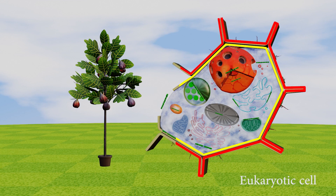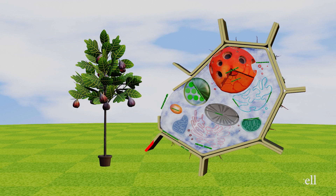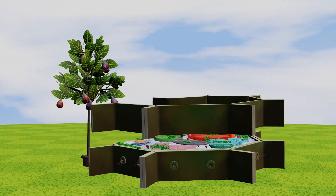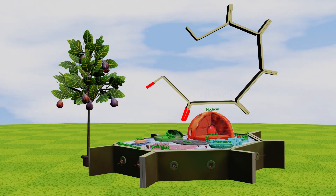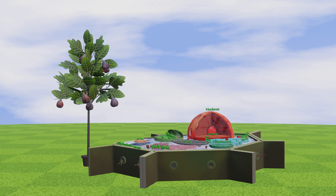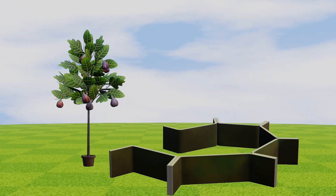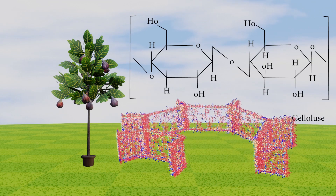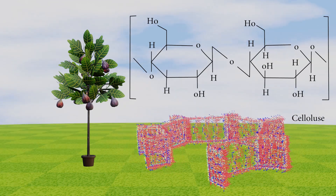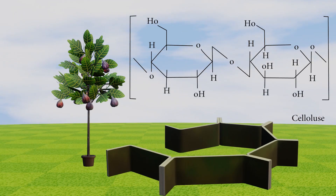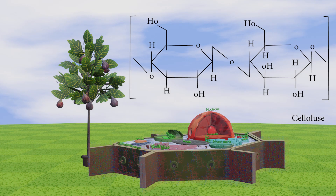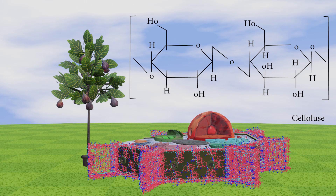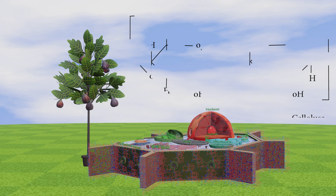Cell wall: The cell wall is the outermost covering of plant cells. Plant cells have a rigid cell wall. It is mainly composed of cellulose. This provides structural support and protection for the cell. Most plant cells have a cellulose cell wall because it provides a structural framework to support plant growth.